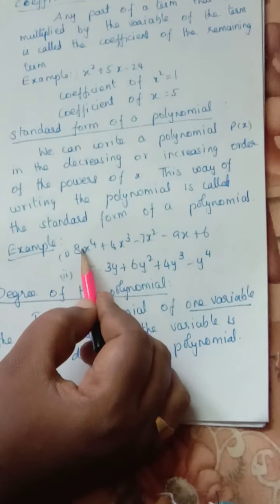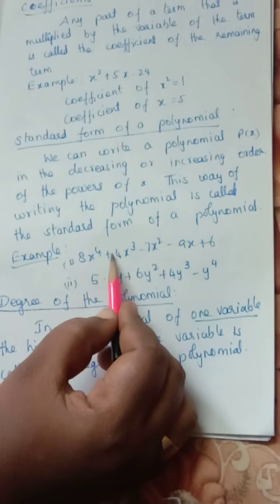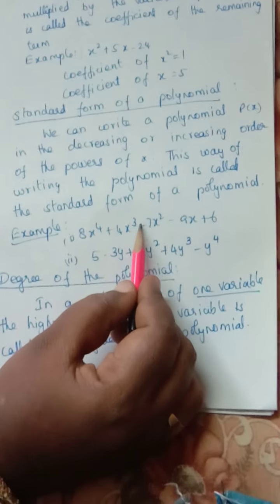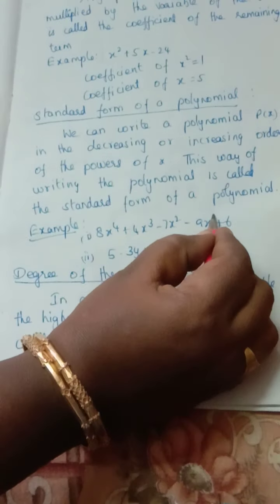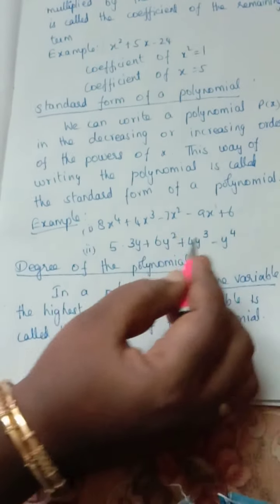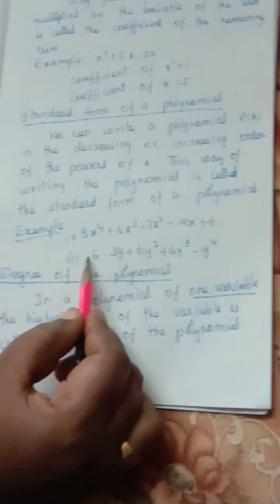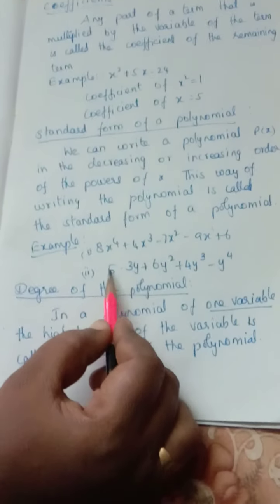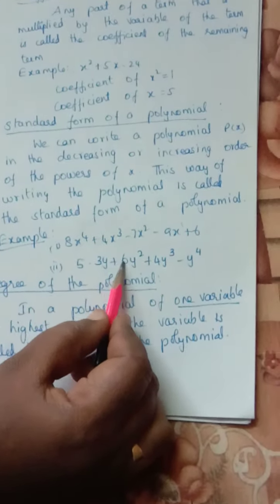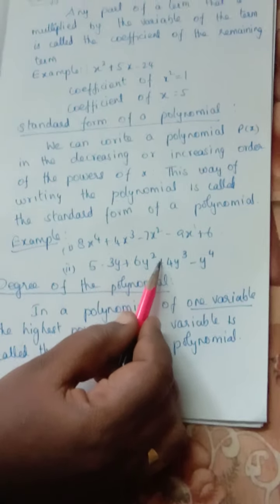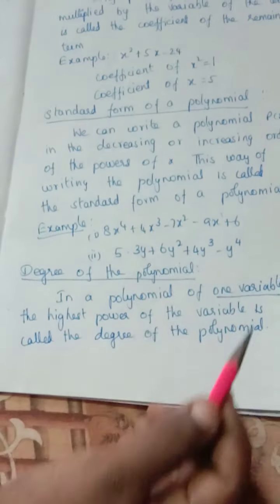Here we are writing in decreasing order: 8x⁴ plus 4x³ minus 7x² minus 9x plus 6. This is in descending order. For ascending order: 5 minus 3y plus 6y² plus 4y³ minus y⁴ — that means starting from power 1 up to power 4.